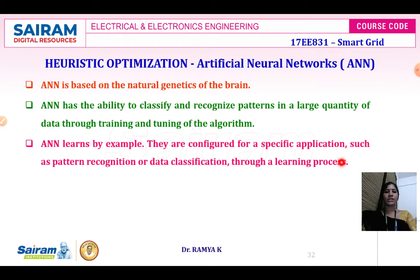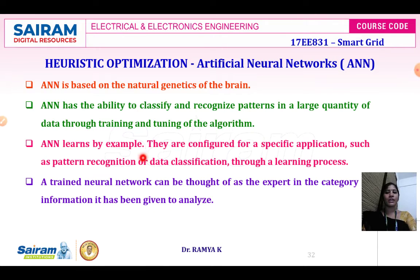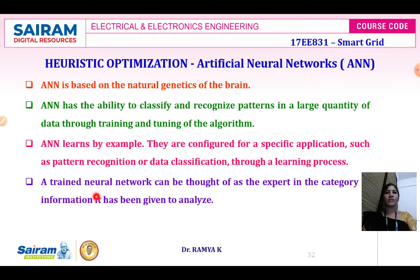ANNs are configured for specific applications such as pattern recognition and data classification through a learning process. With trained data and their remarkable ability to derive meaning from complicated or imprecise data, ANN will be trained and derive meaningful data extracted from that complicated data, detecting patterns too complex to be noticed by humans or other computer techniques. A trained neural network can be thought of as an expert in the category of information it has been given to analyze.